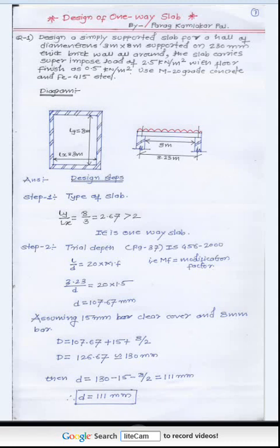Hi friends, this is Paragpal and today we are discussing about designing a one-way slab. The numerical is: design a simply supported slab for a hall of dimension 3m x 8m supported on a 230mm thick brick wall all around. The slab carries a superimposed load of 2.5 kN/m² with a floor finish of 0.5 kN/m². Use M20 grade of concrete and Fe415 steel.